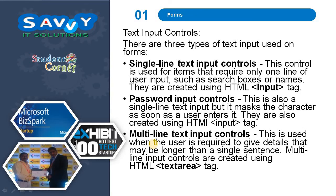Text input controls: there are three types of text input used on forms — single line text input controls, password input controls, and multi-line text input controls. Single line text input controls are used for items that require only one line of user input, such as search boxes or names, and are created using the HTML input tag. Password input controls are also single line but mask the character as soon as a user enters it. Multi-line text input controls are used when the user is required to give details longer than a single sentence, and are created using the HTML textarea element.